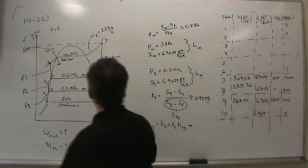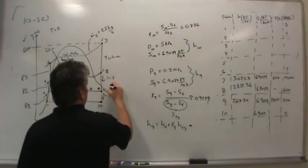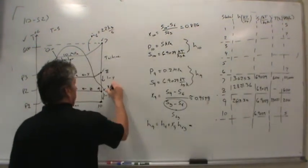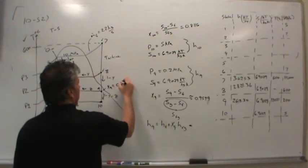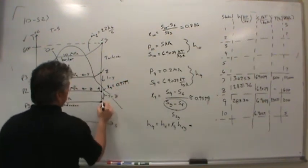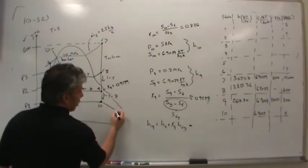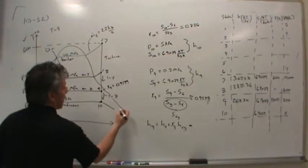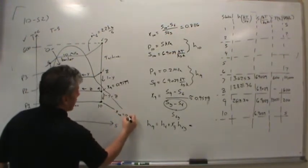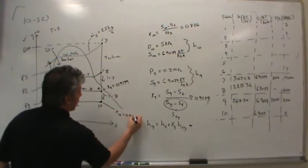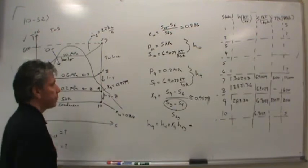I'll make a note that the quality in state 9 is 0.9599, in case I need it later. And the quality here at state 10 is 0.8116.